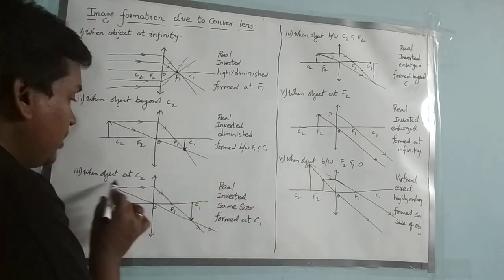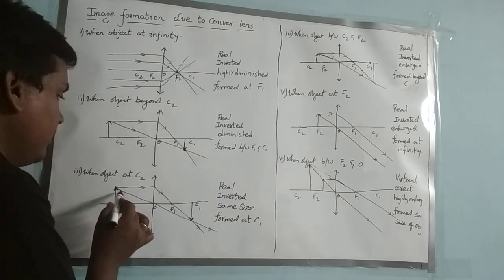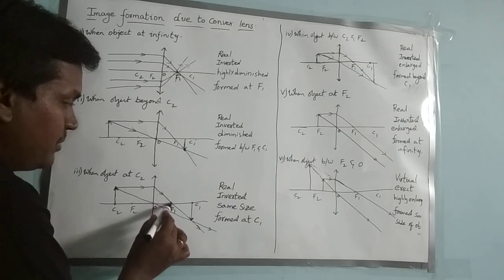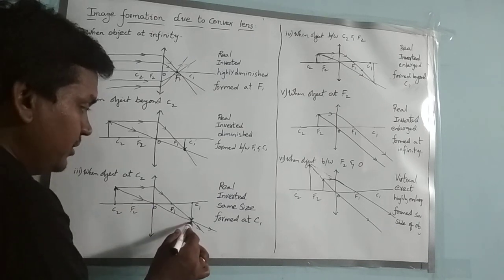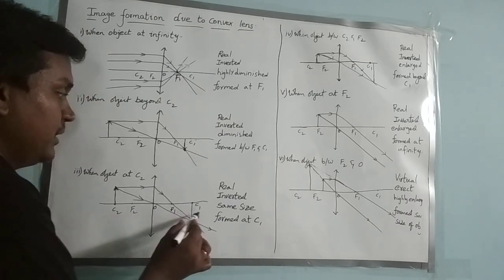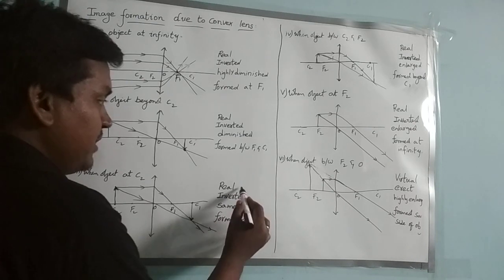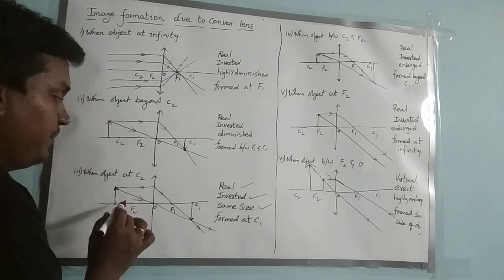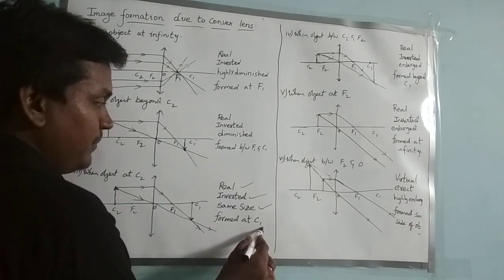Coming to the third case: when the object is at C2, that means exactly at the center of curvature. Two rays are considered: a ray parallel to the principal axis will pass through the focus, and a ray passing through the optical center will go undeviated. These two rays meet exactly at C1. So when the object is at C2, the image will be at C1. The image is real, inverted, and the same size as the object — the object size equals the image size.